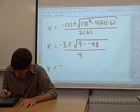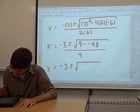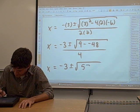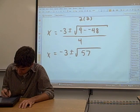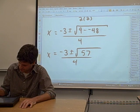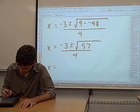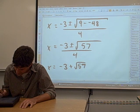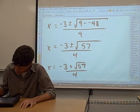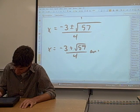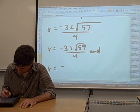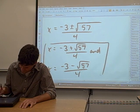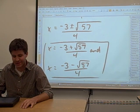9 minus negative 48 is 57. Divide that by 4, and we have two answers: x equals negative 3 plus the square root of 57 over 4, and x equals negative 3 minus the square root of 57 over 4. Those are the two x values.